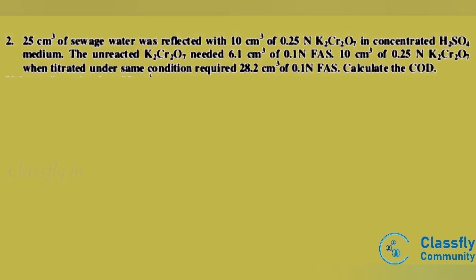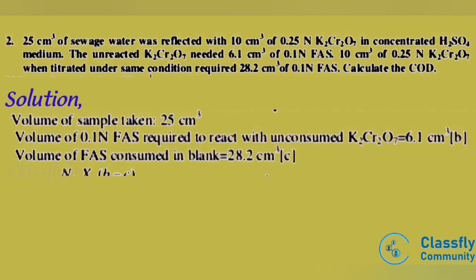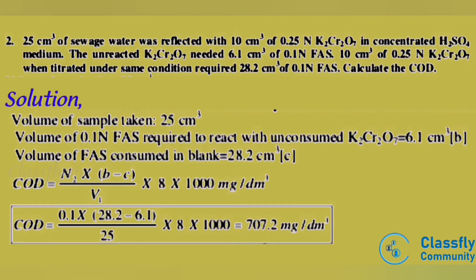Calculate the COD. Solution: given that the volume of sample taken is 25 cm³; the volume of 0.1 N FAS required to react with unconsumed K2Cr2O7 is 6.1 cm³ (denoted B); and the volume of FAS consumed in the blank is 28.2 cm³ (denoted C). COD = N2 × (B − C) / V1 × 8 × 1000 mg per dm³.